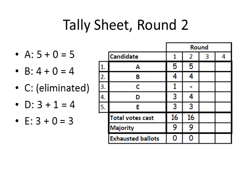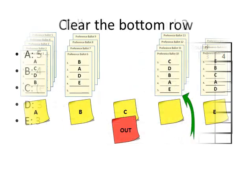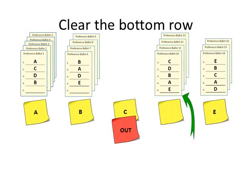Round 2 votes are totaled and a majority is computed. No candidate got a majority in round 2, so the candidate with the fewest votes — candidate E in this case — is eliminated, and his ballots will be distributed among the remaining candidates according to the voter's next highest preference. Before doing so, however, any ballots below the sticky notes should be placed on the appropriate stacks above the sticky notes.